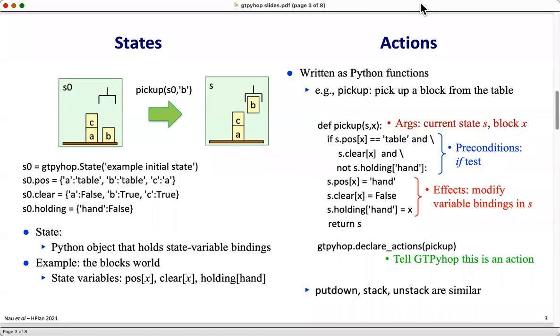In GT PyHop, states are Python objects that hold state variable bindings. As an example in the blocks world, the state variables include the positions of blocks, whether they are clear, and whether the robot hand is holding anything or not.